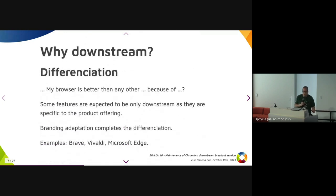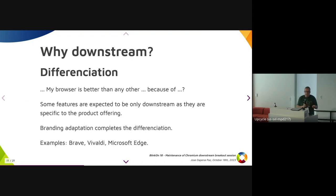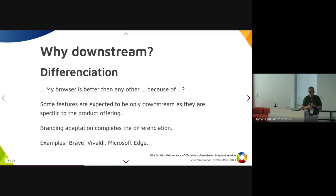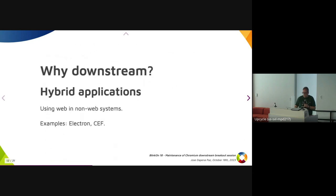Another reason is differentiation — making your browser better than others because you have a specific feature. Some features are expected to stay downstream because the people doing differentiation want to maintain their own identity. There's also branding adaptation, because the product needs its own recognizable brand and needs to integrate properly with other components in the platform. Examples include Brave, Vivaldi, Microsoft Edge — they are different browsers with different features.